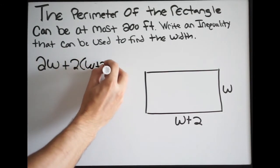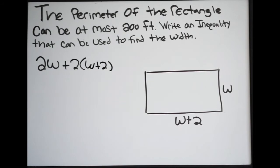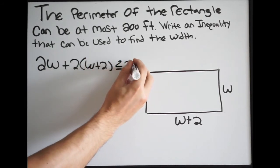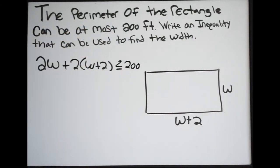Now this whole thing has to be less than or equal to 200. Again, look at the word 'at most' 200 feet, so it has to be less than or equal to 200. There's your inequality.